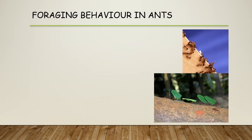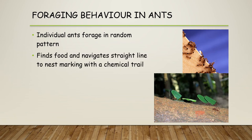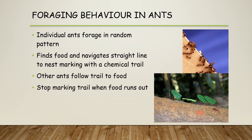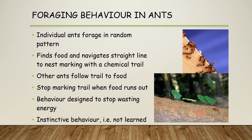Ants also have foraging behaviour and ways to communicate back to their colony. Individual ants forage in a random pattern, but when they find food they navigate back to the nest marking a chemical trail. Other ants then follow that trail to the food and continue marking it until the food runs out, stopping any wasting of energy. This is an instinctive behaviour — they automatically know how to perform it without learning.